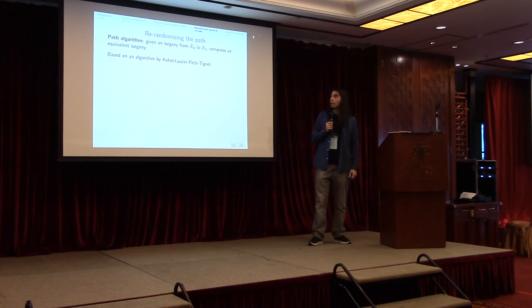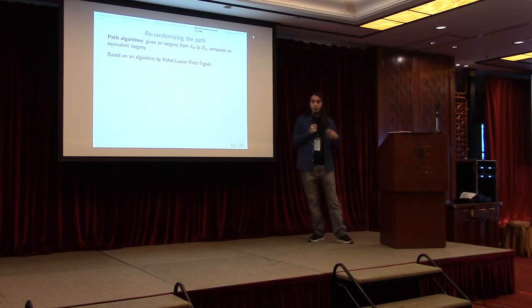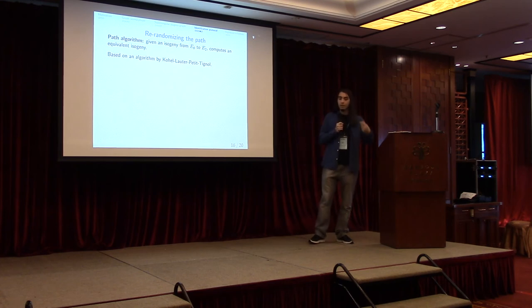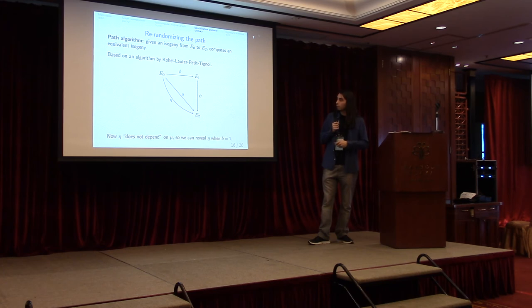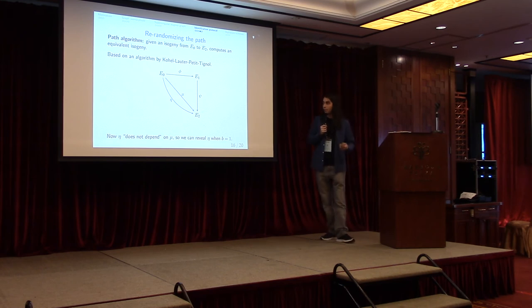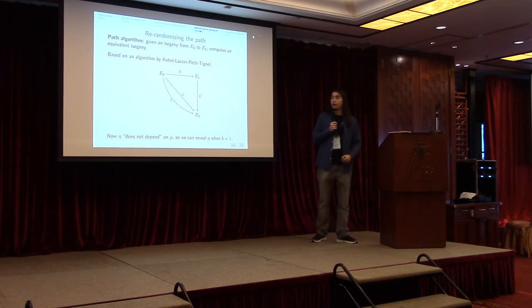So how do we solve this? There's an algorithm that we can build and it's based on an algorithm for a related problem published a few years ago. Essentially what it does is it allows us to take this isogeny we have from E0 to E2 and compute another one that is independent of the path we took before. So it's essentially a, in a sense, a randomization of this path. So what we do now is when the bit is one, we want to answer with an isogeny from E0 to E2. First we take the composition of these two but we don't reveal it. We just apply to it this new path algorithm and compute this re-randomized path between E0 and E2, and this is the one we reveal. In this way we're solving the zero knowledge problem we had before.